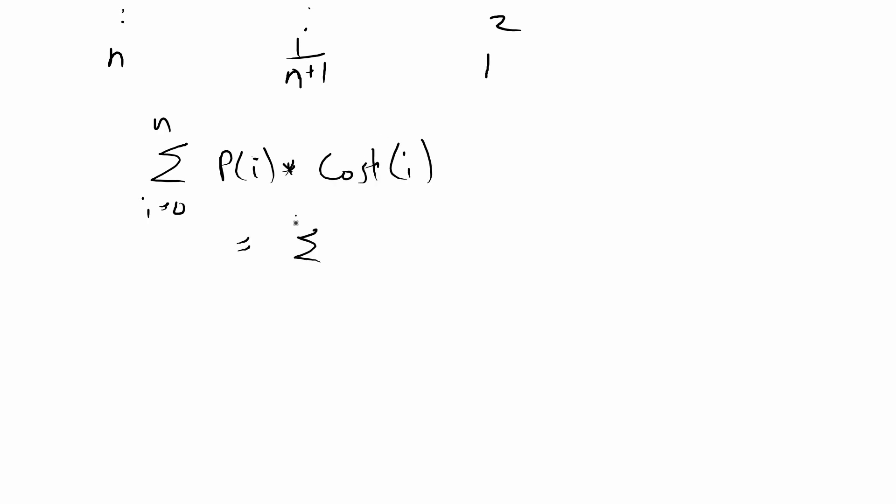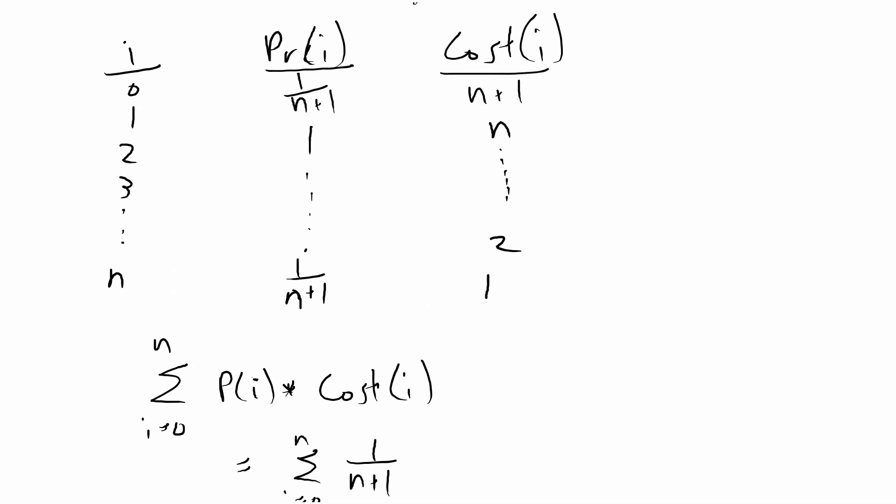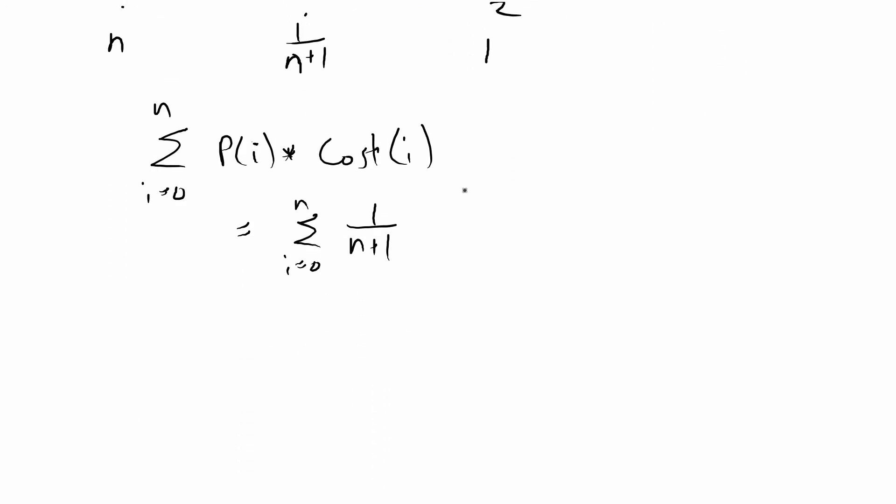Our array is starting from 0 to n, and we have the probability of i and we need to figure out a formula for the cost of i. The probability we just said was 1 over n plus 1, and that's basically constant for any value. Now we have to figure out how you would write this as a formula. When i is 0 we have n plus 1, and when it's n we just have 1. You could write it as n plus 1 minus i.